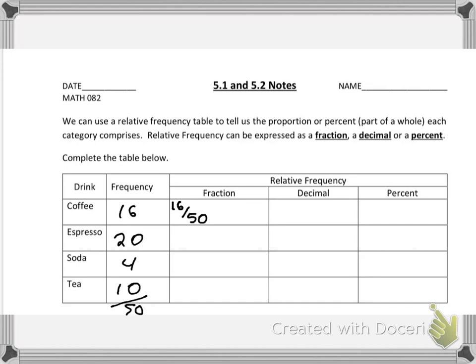However, if we chose to, we could reduce it to 8 over 25. So in statistics, I would accept both of those answers. Either one would be equally valid. 20 over 50 would reduce to 2 over 5. 4 over 50 would reduce to 2 over 25. And 10 over 50, if you decided to reduce it, would reduce to 1 over 5.